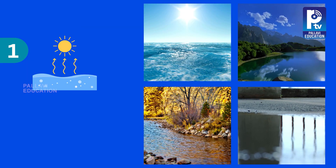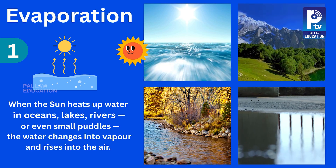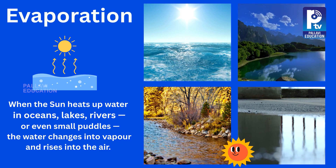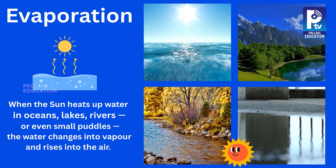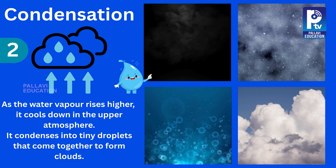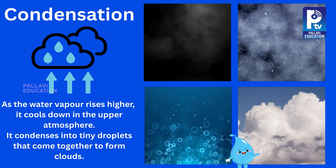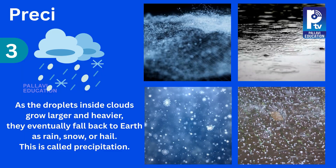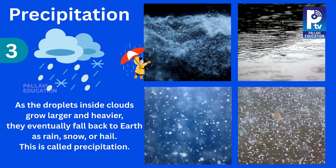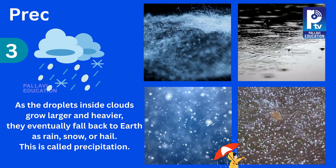The first step is evaporation. When the sun heats up water in oceans, lakes, rivers, or even small puddles, the water changes into vapor and rises into the air. The second step is condensation. As the water vapor rises higher, it cools down in the upper atmosphere and condenses into tiny droplets that come together to form clouds. The third step is precipitation. As the droplets inside clouds grow larger and heavier, they eventually fall back to Earth as rain, snow, or hail.